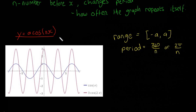The exact same thing happens to cos, so I'm not going to go into the same amount of detail. Here we have cos(x) — remember it starts at 1 and the period is 2π, so it repeats itself every 2π, going from 1 to minus 1. The purple one we have is 3cos(2x), so you can see it goes up to 3 and down to minus 3.